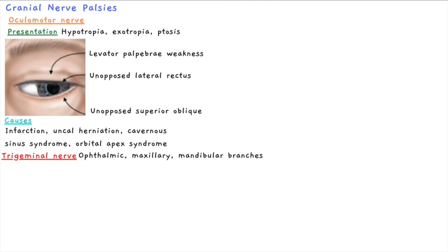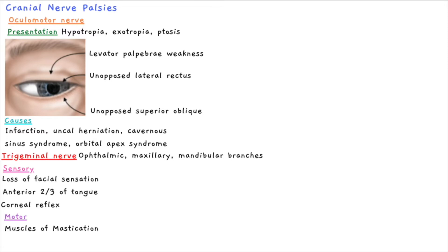The next nerve is the trigeminal nerve, which, as the name suggests, has three branches: the ophthalmic, maxillary, and mandibular branches. When there is a lesion, there are both sensory and motor effects. Sensory effects include loss of facial sensation, sensation of the anterior two-thirds of the tongue, and the sensory component of the corneal reflex.